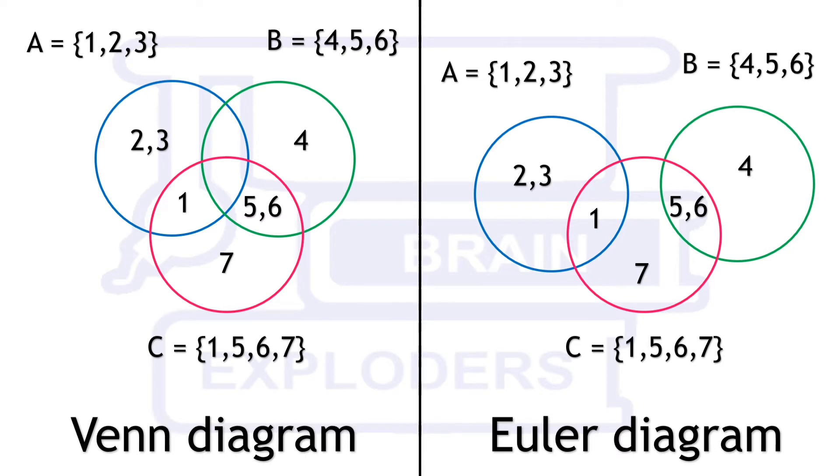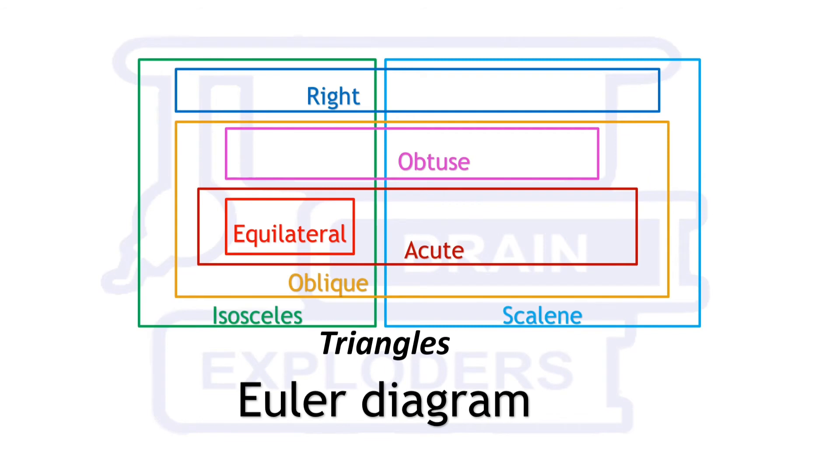Since Venn diagrams also show these really existing relations, that's why it is an Euler diagram as well. And for the same reason, the diagram shown in the beginning of the video is an Euler diagram.